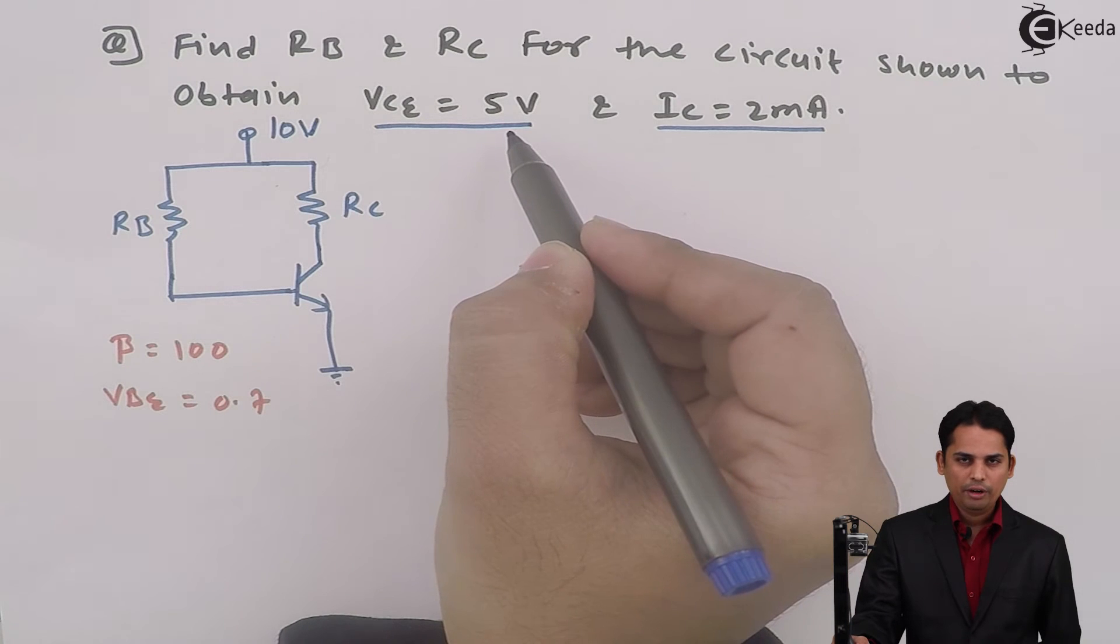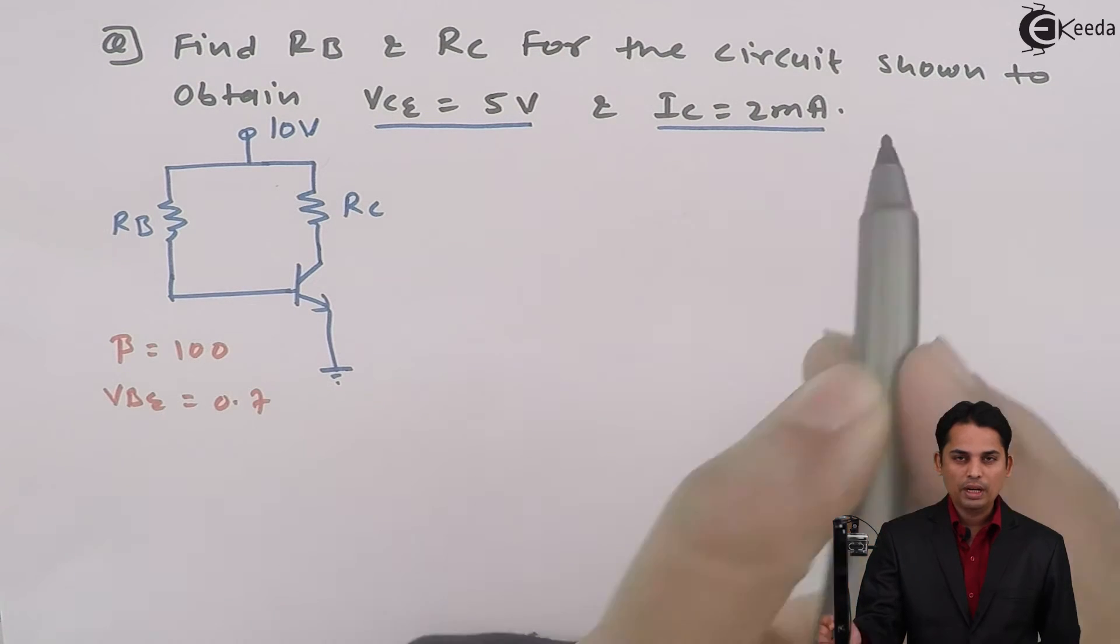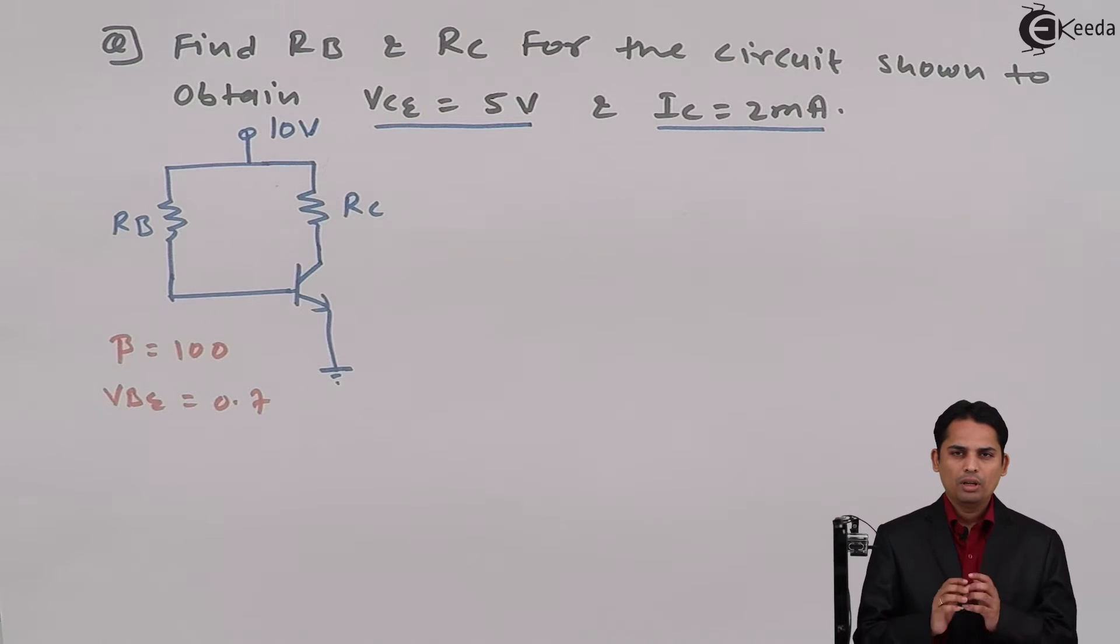So how to solve this problem? It is very simple. We know how to find out the Q-points; similar steps will be applied in order to find out missing values of the resistors. Step one is always to find out base current, step two is to find out collector current, and step three is to find out voltage between collector to emitter.